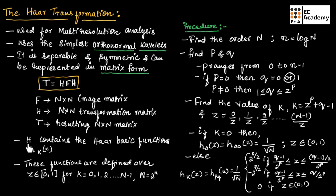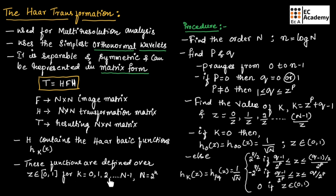The transformation matrix contains the Haar basis function HK of Z. These functions are defined over Z belonging to [0, 1], for K ranging from 0, 1, 2 up to n minus 1. Here, n will be equal to 2 to the power of n.